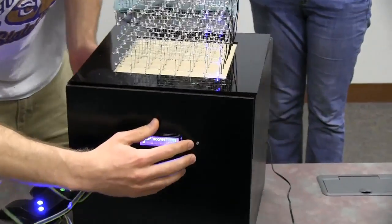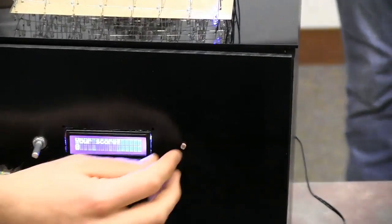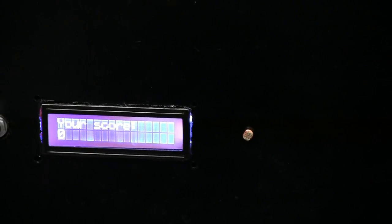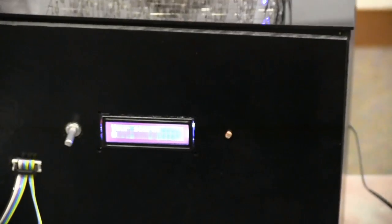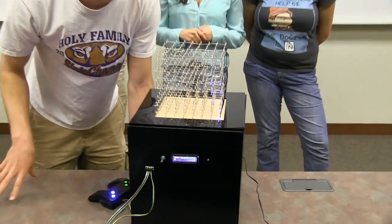The photoresistor is right here. It's super simple, kind of a sensor. Basically, when the lights go down, the resistance goes up. The Arduino measures the resistance, and when it's above a certain level, then it allows the cube to play.